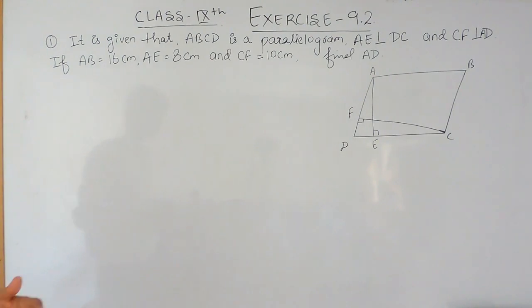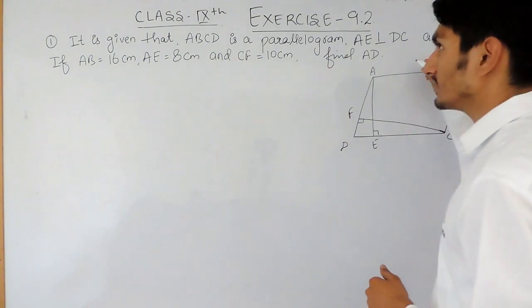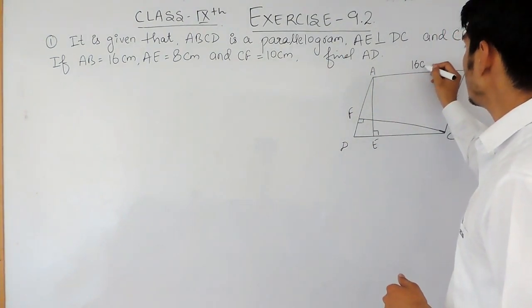we have to find AD. Okay, here the length of AB is given to you as 16 cm.